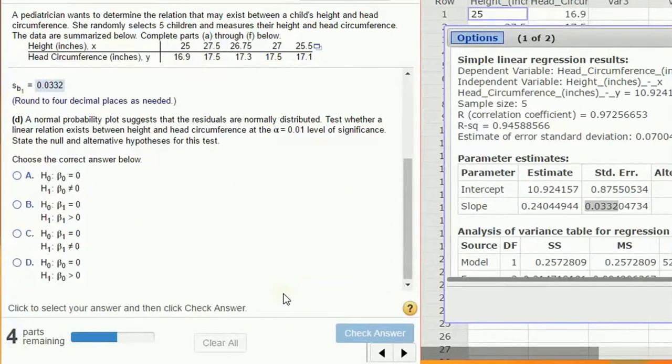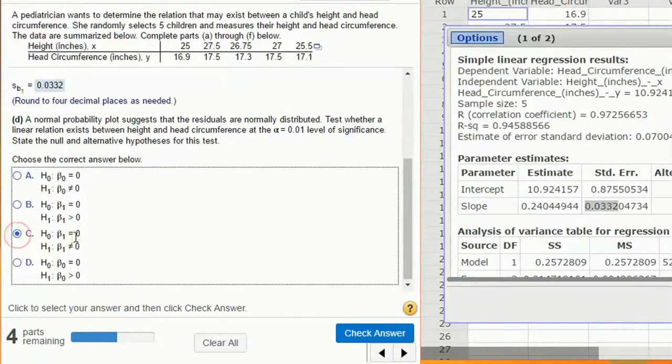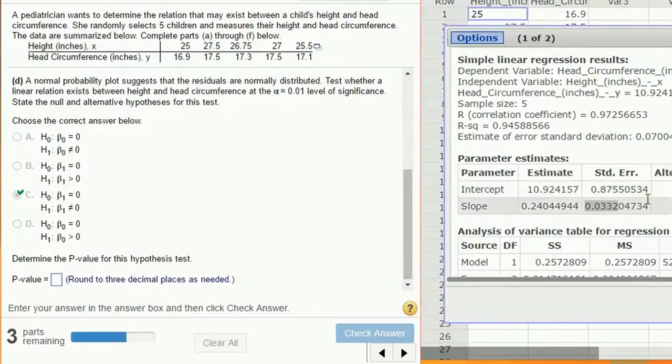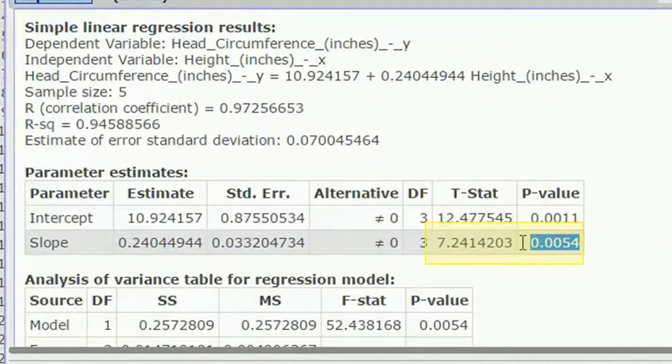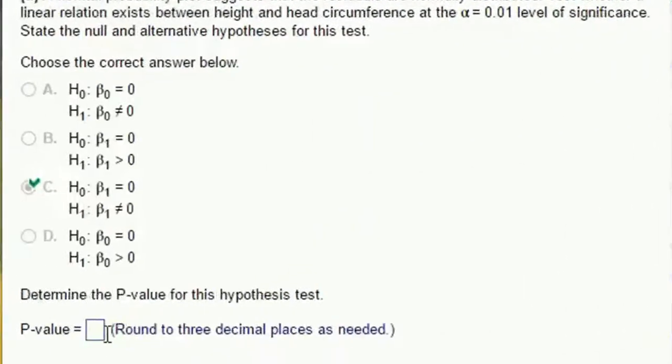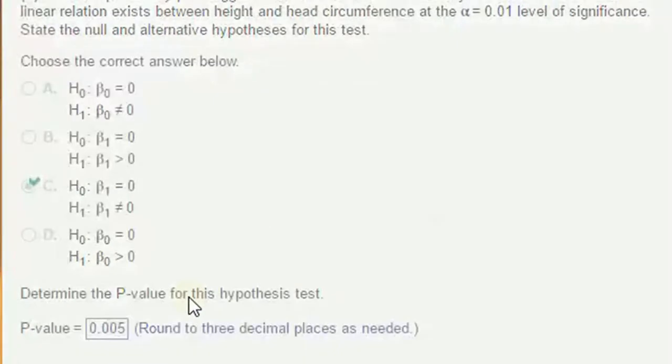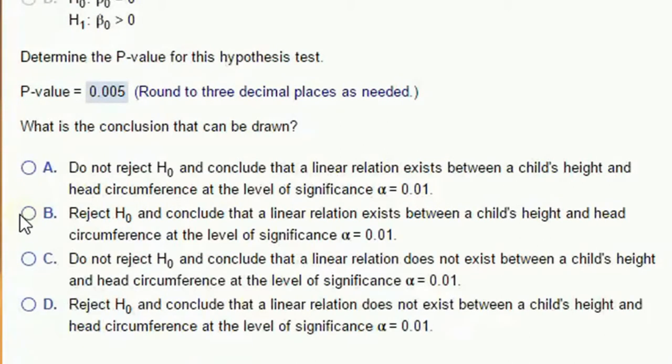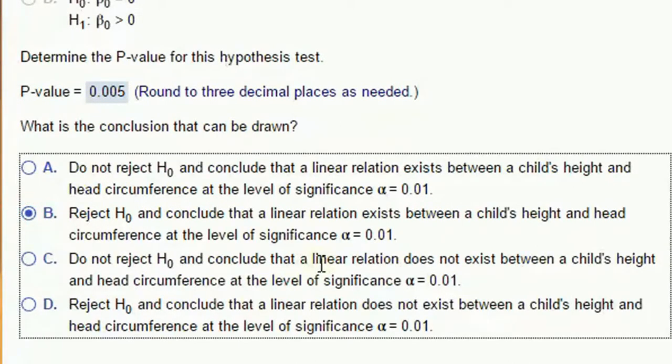So now, a normal probability plot suggests that the residuals are normally distributed. Test whether a linear relationship exists between height and head circumference at alpha 0.01. So the null hypothesis would be that the slope is 0, which is to say beta 1 equals 0. The alternative is beta 1 does not equal 0. That's what we want to run. The null is beta 1 equals 0. Alternative beta 1 not equal 0. Beta 1 is the slope. If the slope is 0, that means it doesn't matter what value x is, y is not going to be affected. And what's the p-value for the test? Remember, the p-value for the test is given in our statistical output. Three decimal places is 0.005, which is small and smaller than my alpha. Or the alpha is 0.01. So we do reject H naught. Conclude there is a linear relationship between the child's head and head circumference.